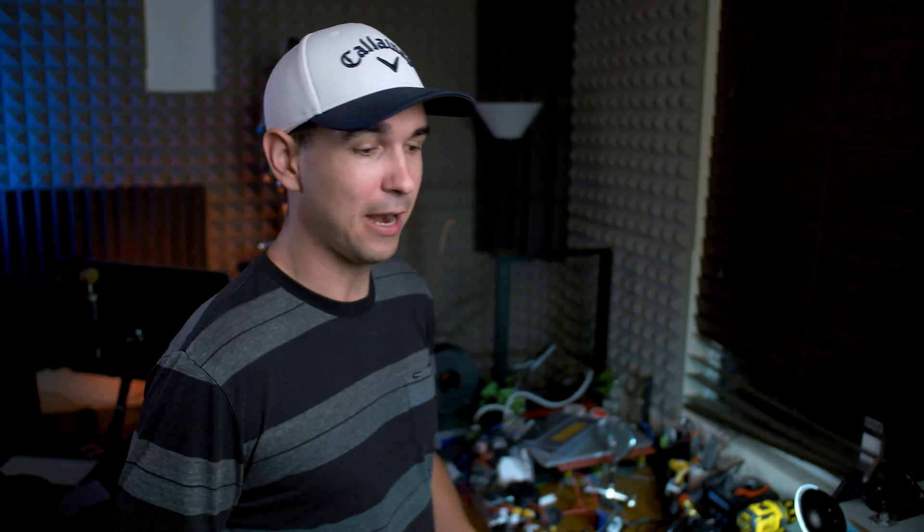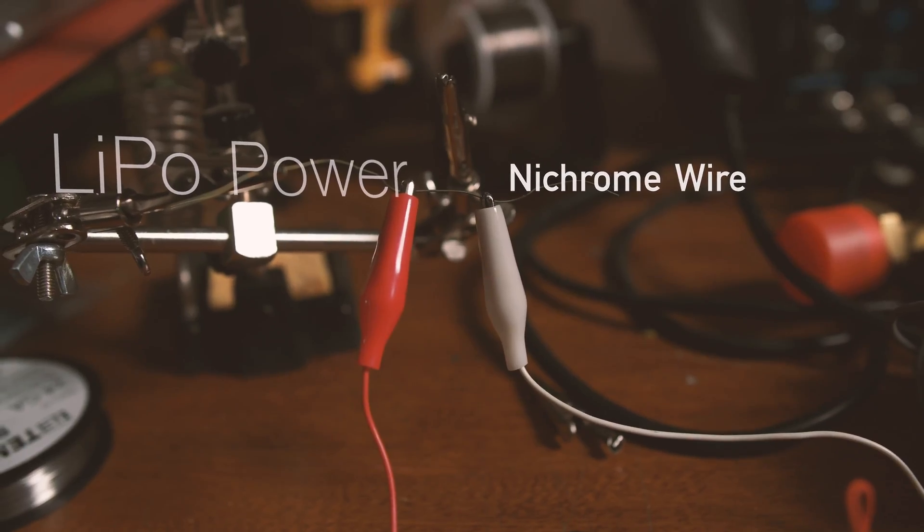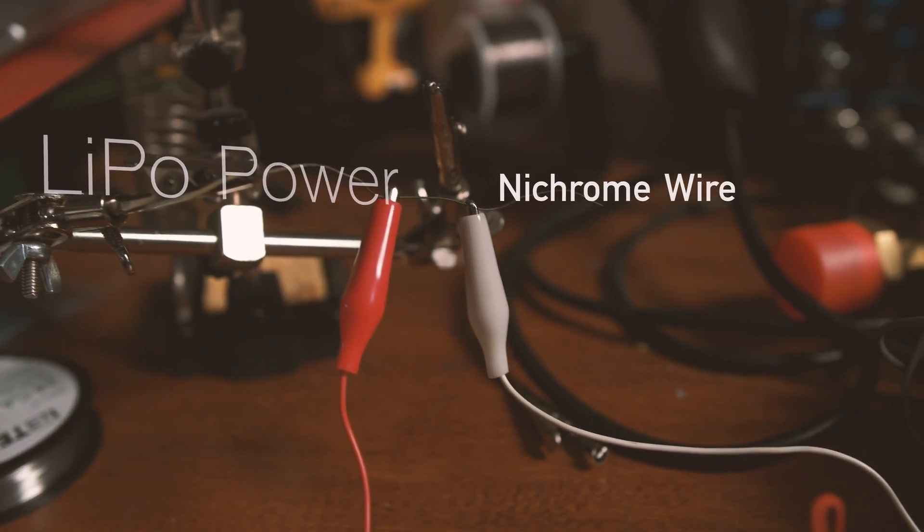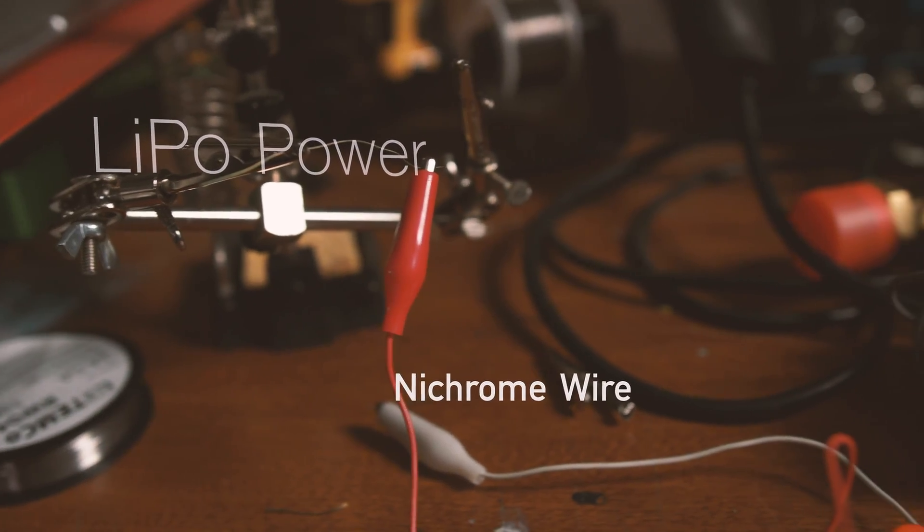I was going to use some nichrome wire, but I found that after hooking it up to my high-power LiPo batteries and flipping the switch, the nichrome wire would heat up and just instantly melt. So it's not going to really stand the test of time using just hot wire for that.